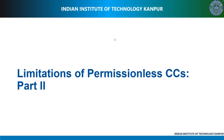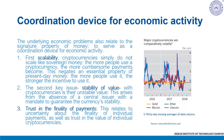In this video, we'll conclude our discussion on limitations of cryptocurrency operations due to permissionless blockchains. The underlying economic problems with cryptocurrencies go well beyond just the energy issue and relate to the signature property of money — to serve as a coordination device for economic activity. These shortcomings lie in three areas: first, scalability; second, stability of value; and third, trust in the finality of payments.